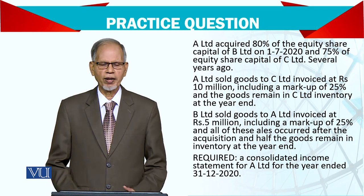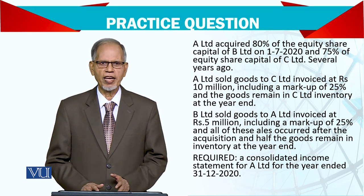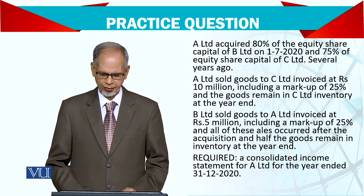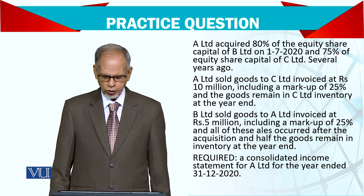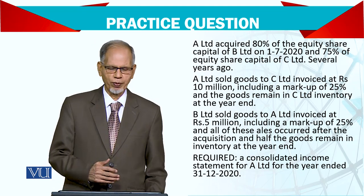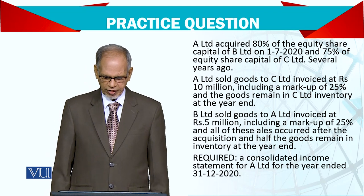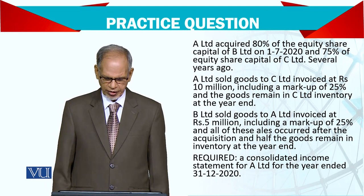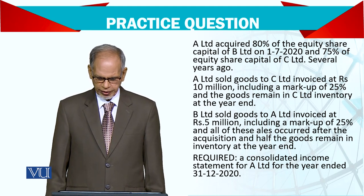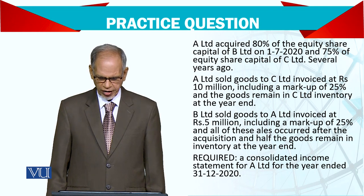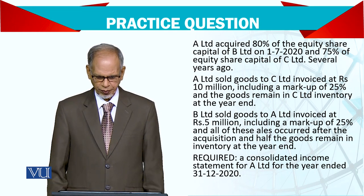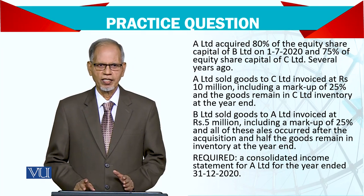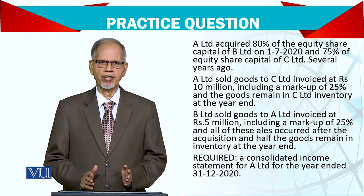The goods are still within the group, so the unrealized profit on those goods needs to be adjusted. B sold goods to A, and of those goods, half are still in inventory — so 50% of the profit is unrealized and must be adjusted.